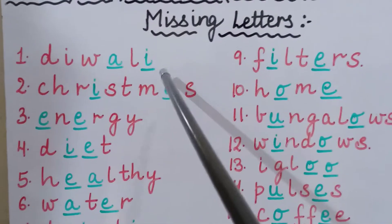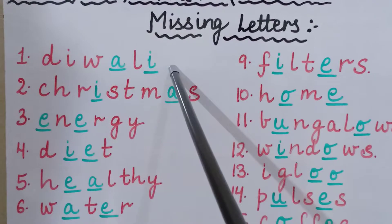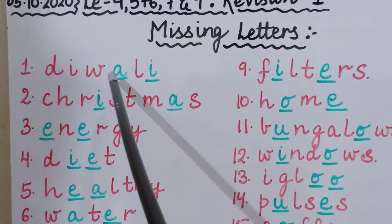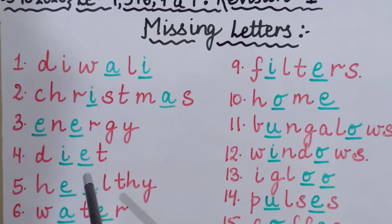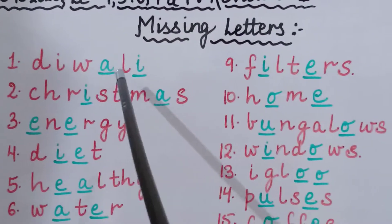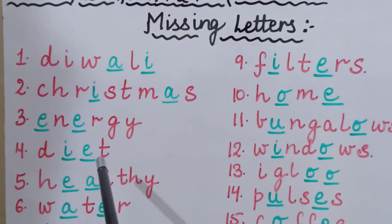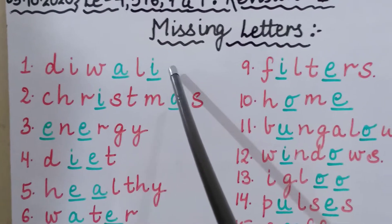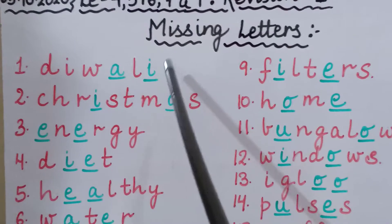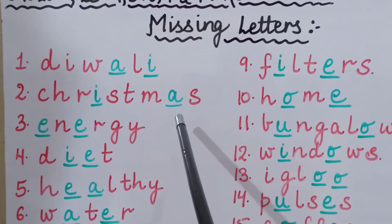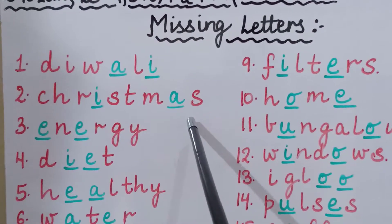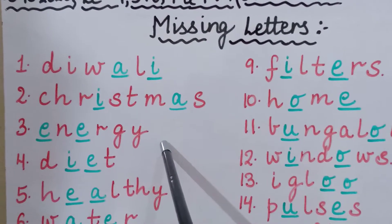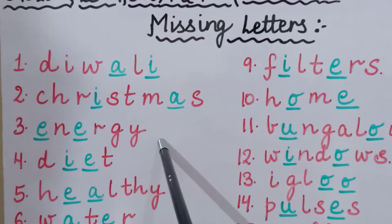The first word of missing letters is D-I-W-A-L-I, Diwali. Remember in your exam paper also you will get these where I have written with green color — these are all your answers. So you have to know all the spellings, your spellings should be very clear. The second word is C-H-R-I-S-T-M-A-S, Christmas. The third word is E-N-E-R-G-Y, Energy.